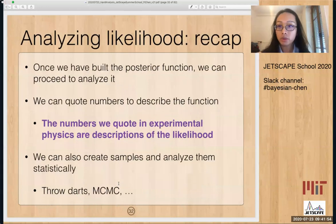Okay, so let me recap a little bit about this part of the lecture. So once we have built the posterior function, then we can proceed to analyze it. And what we can do is we can quote numbers to describe the function. And let me repeat the important message here. The numbers we quote in experimental physics are descriptions of the likelihood of what we think the true value should look like. And in case the thing is not analytical, we can also create samples and analyze them statistically. To do this, we can throw darts or you can run MCMC and so on. There are many other choices as well.